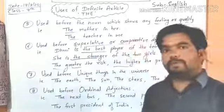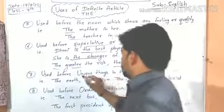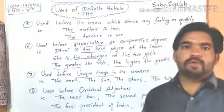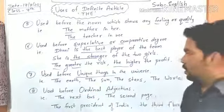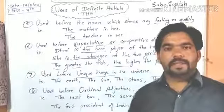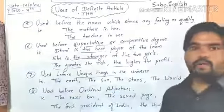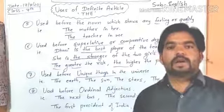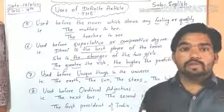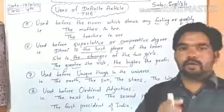The seventh use: 'the' is used before unique things in the universe — things that exist only one of a kind. For example: 'the earth,' 'the sun,' 'the stars,' 'the world,' 'the equator,' 'the Ganga,' 'the Dharamayan.' जो संसार में एक हैं, जो अद्वितीय हैं, unique हैं, उनके लिए भी 'the' का use किया जाता है।